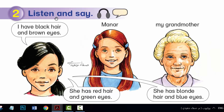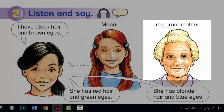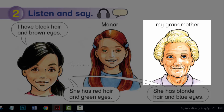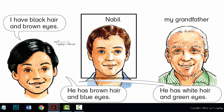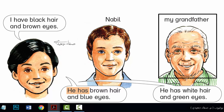Listen and say. This is my grandmother. She has blonde hair and blue eyes. This is my friend, Mana. She has red hair and green eyes. This is my cousin, Nabil. He has brown hair and blue eyes. This is my grandfather. He has white hair and green eyes.